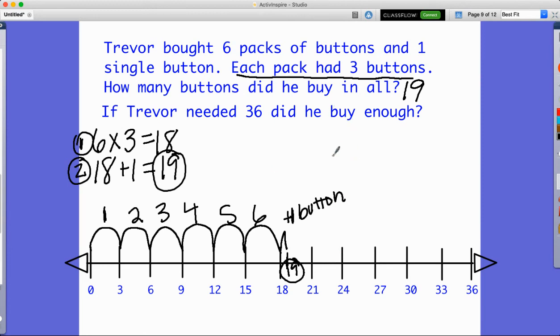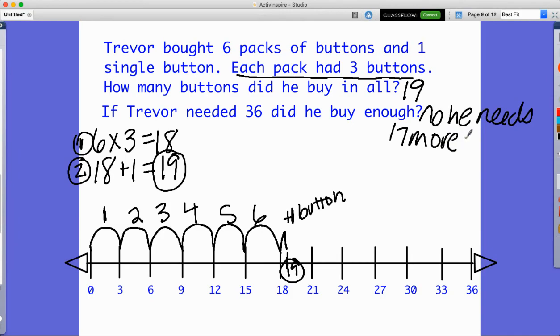Well, if I count up from 19 to 36. So here tells me this would be three, six, nine, 12, 15, and then there's two more here. He would have to have 17 more buttons. So no, he needs 17 more buttons.